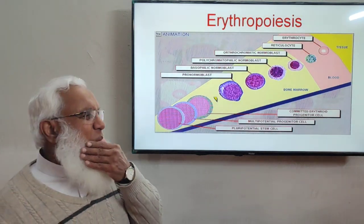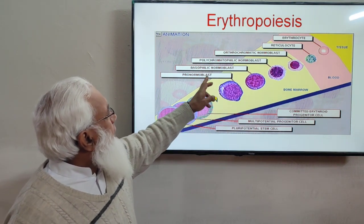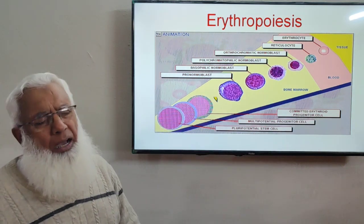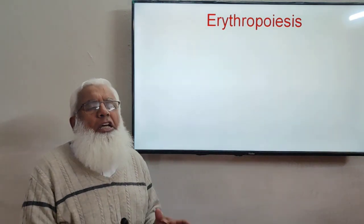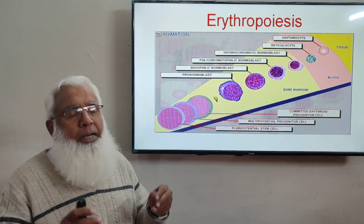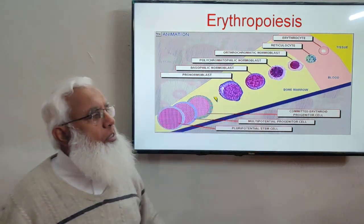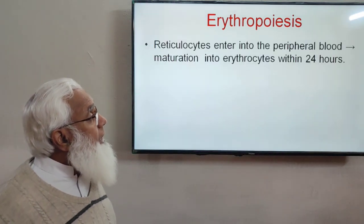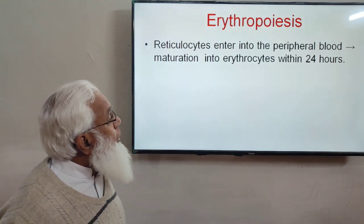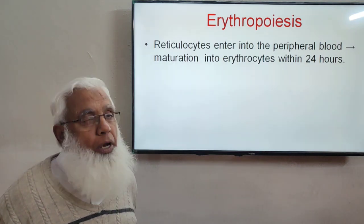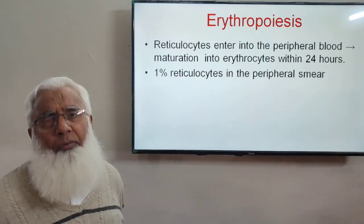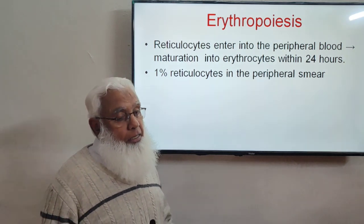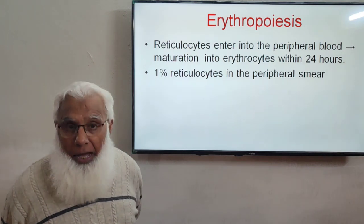Reticulocytes enter the peripheral blood and mature into erythrocytes in approximately one day. About 1% of reticulocytes are present in normal adult peripheral blood — more in newborns when RBC production is higher. Reticulocytes are visualized by special staining with methylene blue, which reveals remnants of ribosomes and the endoplasmic reticulum as a network — hence the name reticulocyte.